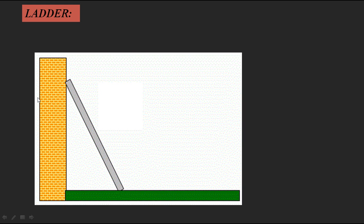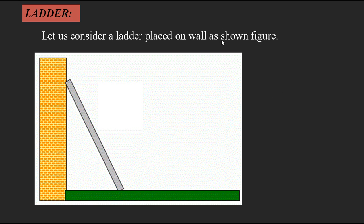Now we analyze friction on a ladder placed against a wall. This is the side view. Whenever the ladder tends to move downward — due to its self-weight or any applied load — the friction acts opposite to that motion. Due to the surface condition at the wall, friction acts between the ladder and the wall, opposing the downward movement, so it acts upward.